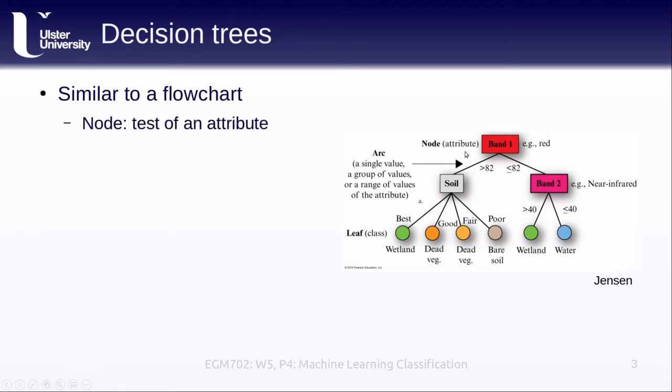We have nodes in our decision tree, and this is where we test different attributes. For example, here we have a node where we're looking at the value in band one, which might be the red band of a particular satellite image.